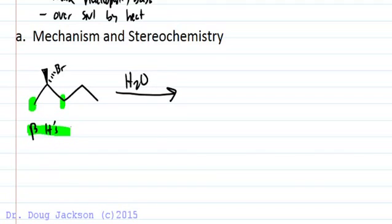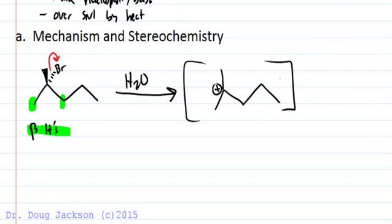If we have an ionizing solvent, we can ionize the same way as SN1. So here we are at the carbocation intermediate.